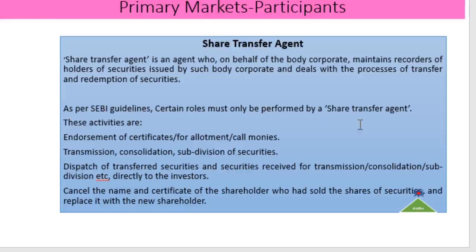These SEBI-mandated activities include endorsement of certificates for allotment or con money transmission, consolidation or subdivision of securities, dispatch of transfer securities, and securities received for transmission, consolidation, and subdivision directly to the investors. They also cancel the names and certificates of shareholders who have sold their shares and replace them with new shareholders.